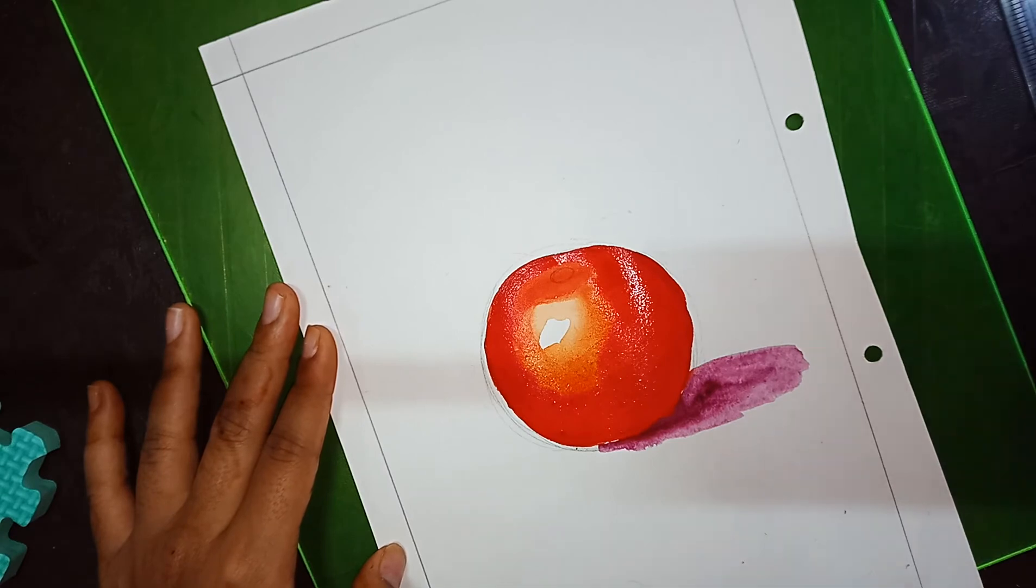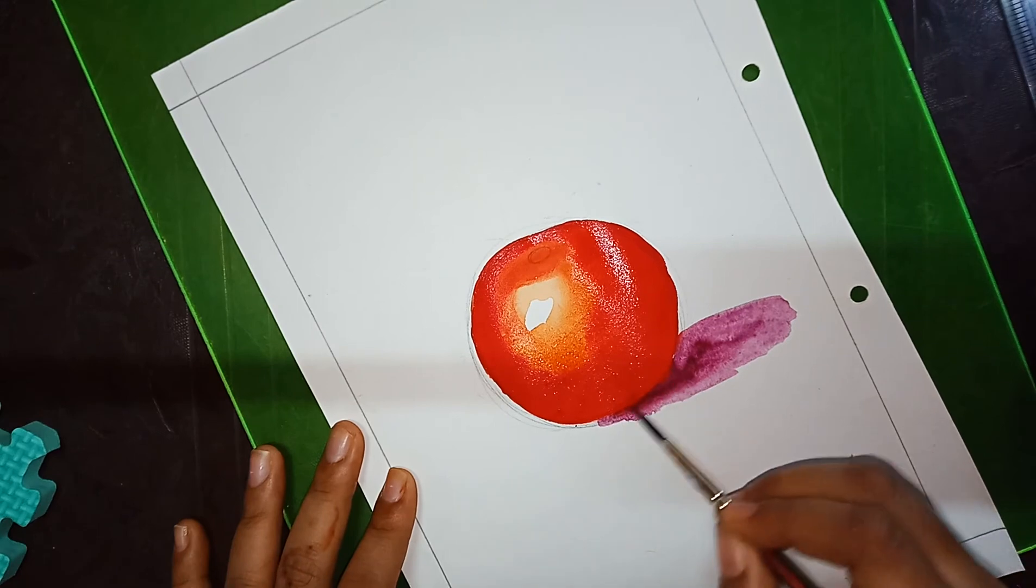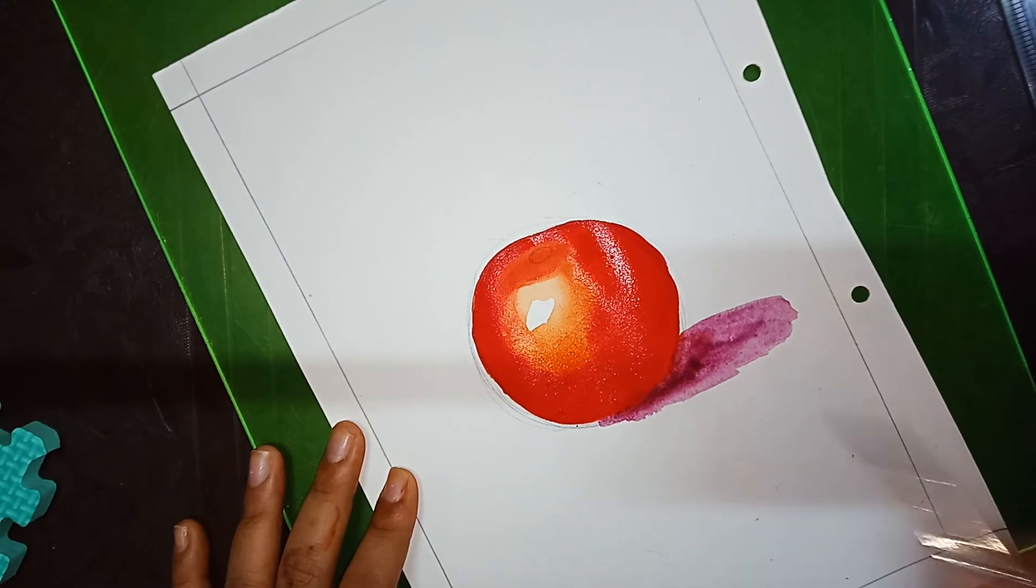Now we are going for the upper part where we had made a small circle. If it is not visible, you can draw it again.